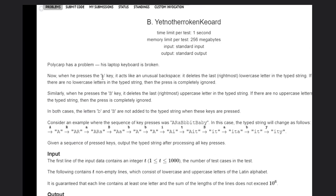Now, he presses b, small b. It acts like unusual backspace. It deletes the last rightmost lowercase letter in the typed string. If there are no lowercase characters in the type string, then the press is completely ignored. Similarly for capital B, it will delete the uppermost character.